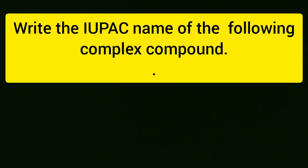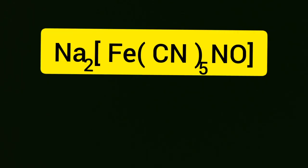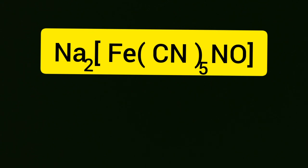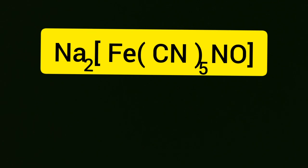Let me write the IUPAC name of the following complex compound written on the screen: Na₂[Fe(CN)₅NO]. In this complex, the oxidation number of Na is +1, the oxidation number of nitrosinium is +1, and it is -1 for cyanide.